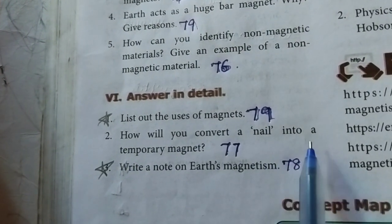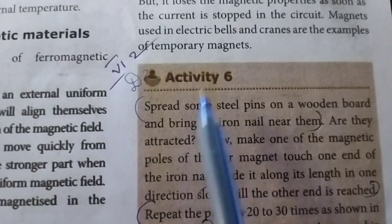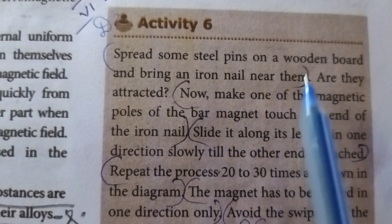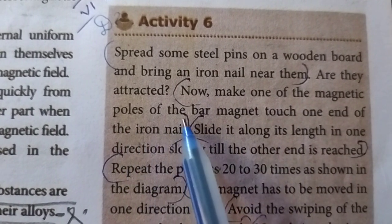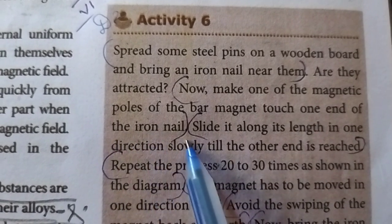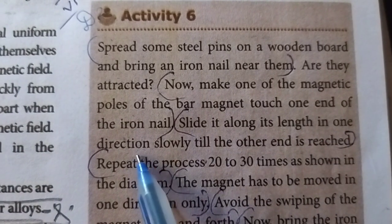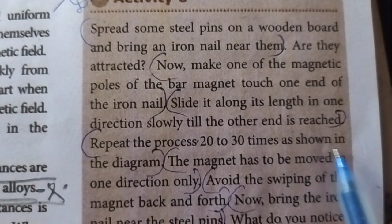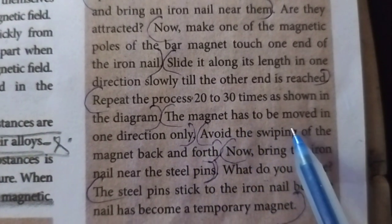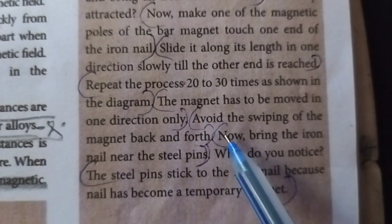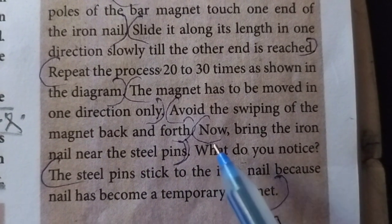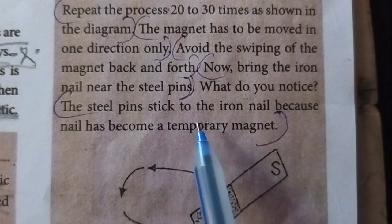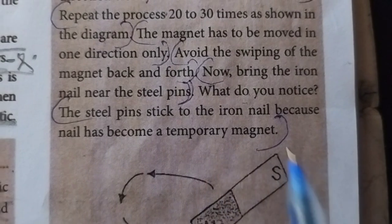Second question: how will you convert a nail into a temporary magnet? Page number 77. First point: spread some steel pins on a wooden board and bring an iron nail near them. Second point: make one of the magnetic poles of the bar magnet touch one end of the iron nail. Third point: slide it along its length in one direction slowly till the other end is reached. Fourth point: repeat the process 20 to 30 times. Fifth point: the magnet has to be moved in one direction only. Sixth point: avoid sweeping the magnet back and forth. Seventh point: now bring the iron nail near the steel pins. Eighth point: the steel pins stick to the iron nail because the nail has become a temporary magnet.